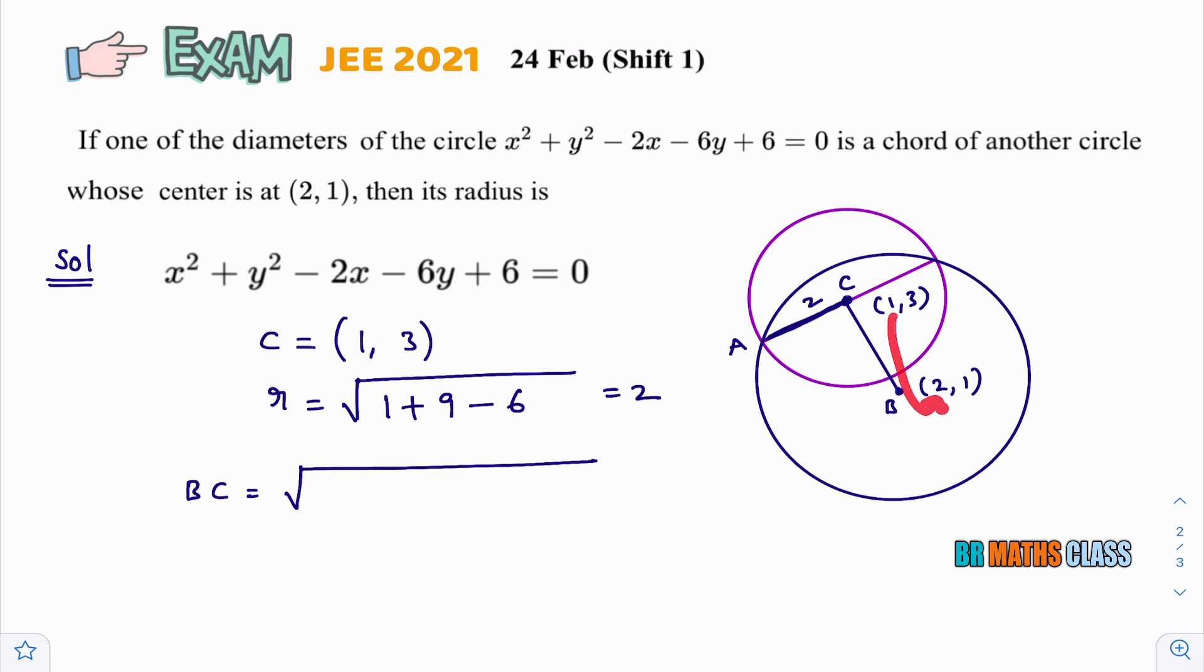1 minus 2 whole square is minus 1 whole square, which is same as 1 plus 3 minus 1 whole square. That is 2 square is 4. So, what you will get here? This is root 5. So, you got that BC as root 5.